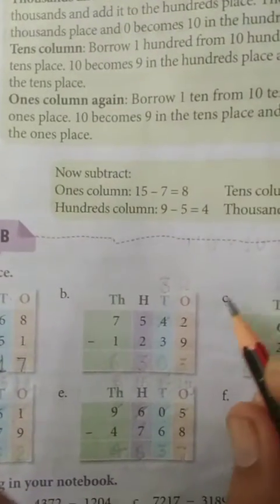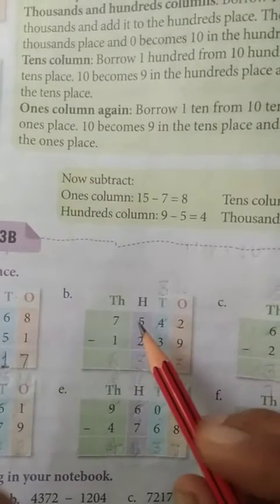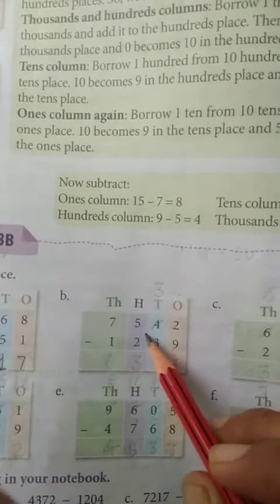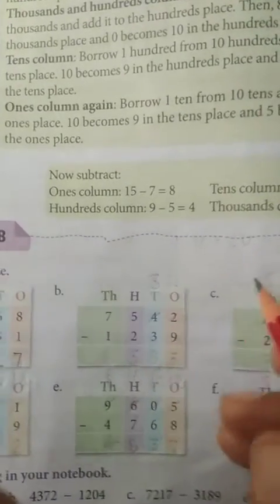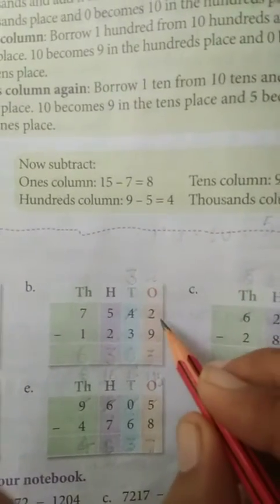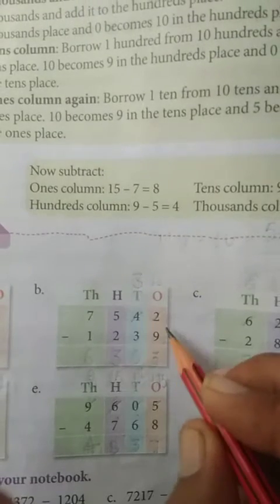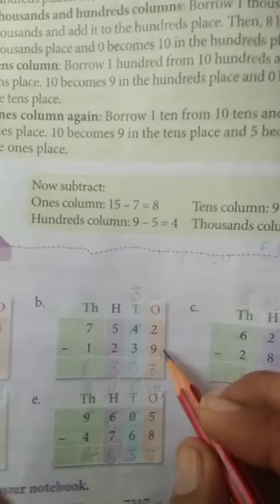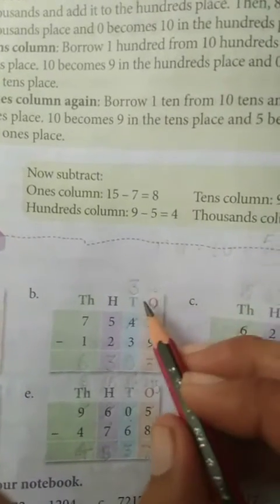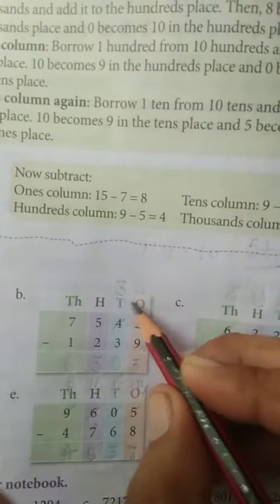Next question, 7542 minus 1239. Start from 1's place. 2 minus 9. 2 minus 9 is not possible. So we have to borrow from 10's place.